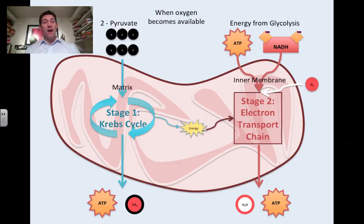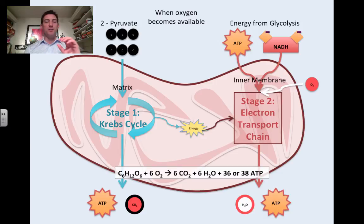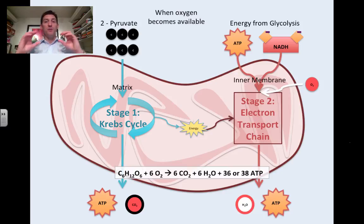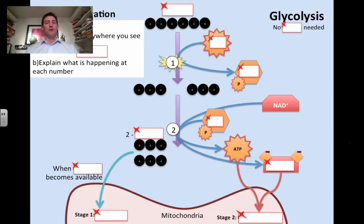So we're constantly getting rid of CO2 every time we breathe, losing some water, and breathing back in oxygen. How much energy do we make? Here's the simplified equation for cellular respiration: C6H12O6 plus six oxygens react together, and we release six CO2 molecules, six water molecules, and we can make anywhere between 36 and 38 ATPs. Basically, you've taken one glucose molecule, breathed in a little oxygen, and through all these processes your body makes 36 to 38 ATPs — a whole bunch of energy from one little molecule of glucose.